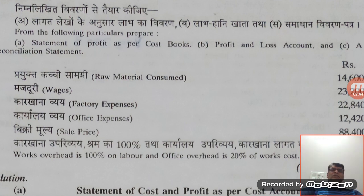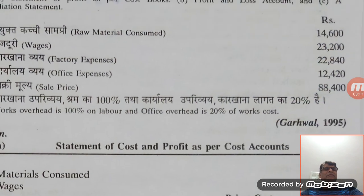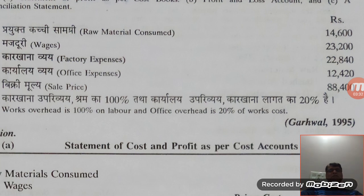Here is the question. From the following particulars, prepare: first, a statement of profit as per cost book; second, a profit and loss account; and third, a reconciliation statement — this topic has three parts. The information given includes raw material, wages, factory expenses, office expenses, and sale price. Works overhead is 100% on labour and office expense overhead is 20% of work cost.